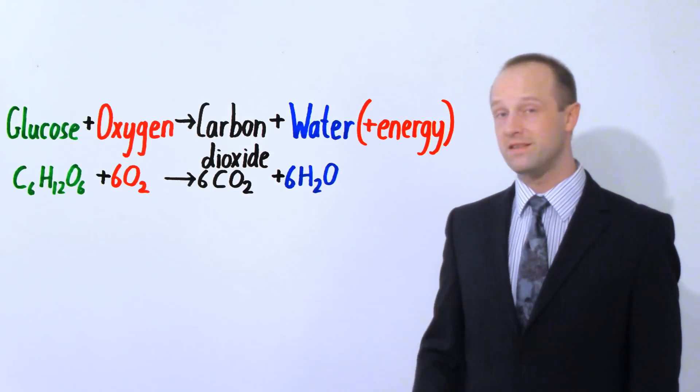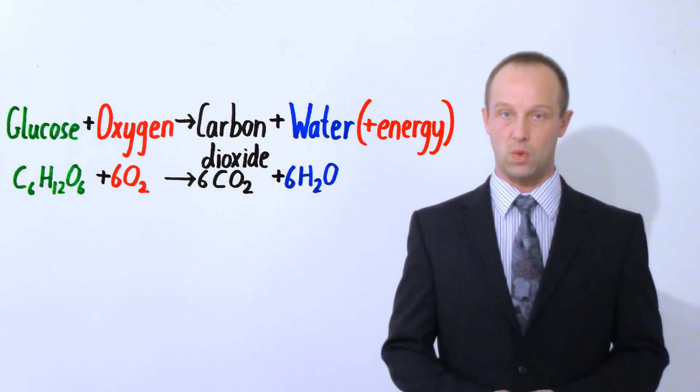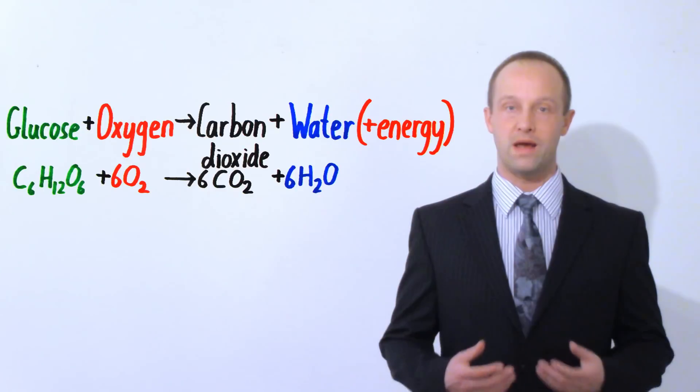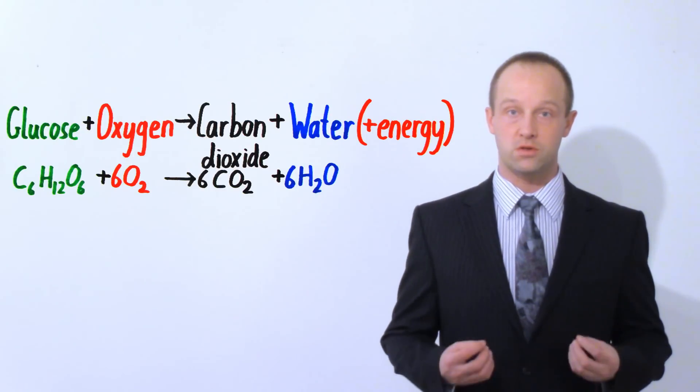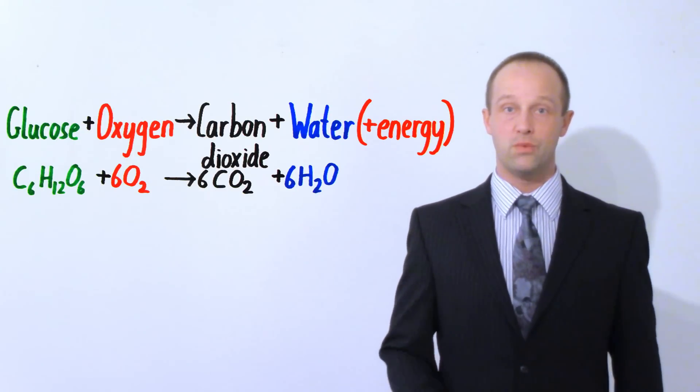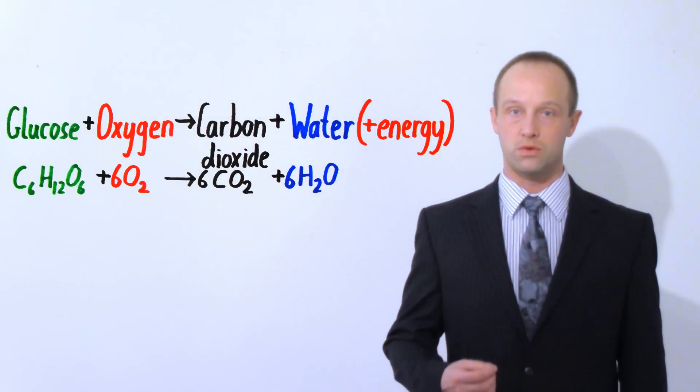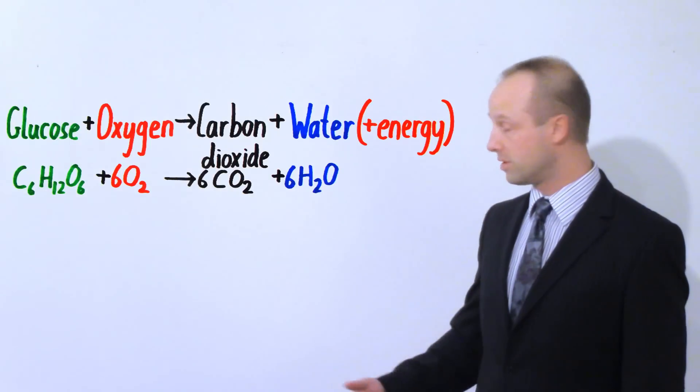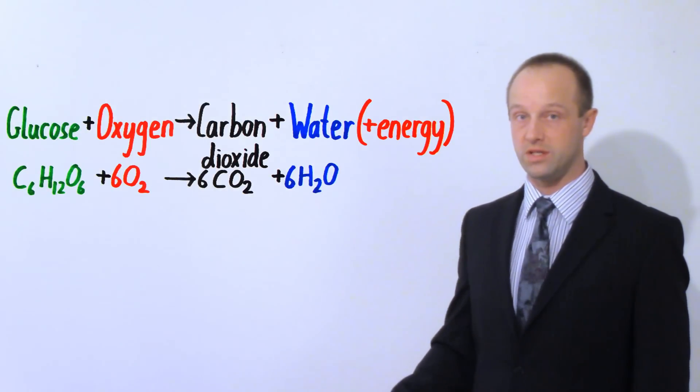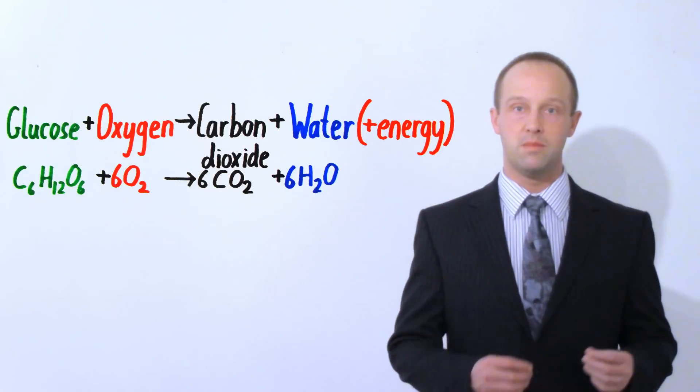The equation is important because it lets us understand the effects of exercise on our bodies as well. If you think about it, whenever we exercise we're wanting to contract those muscles more so we want to respire more and we know from this equation exactly what it is that we need in order to cause more respiration to happen. We need more glucose and we need more oxygen. We're also going to be producing more carbon dioxide and more water.